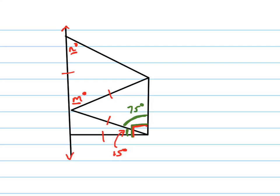Well, if that's 75, and these two are equal, then this is 75. If these two are 75, those add up to 150, and this one must be 30.